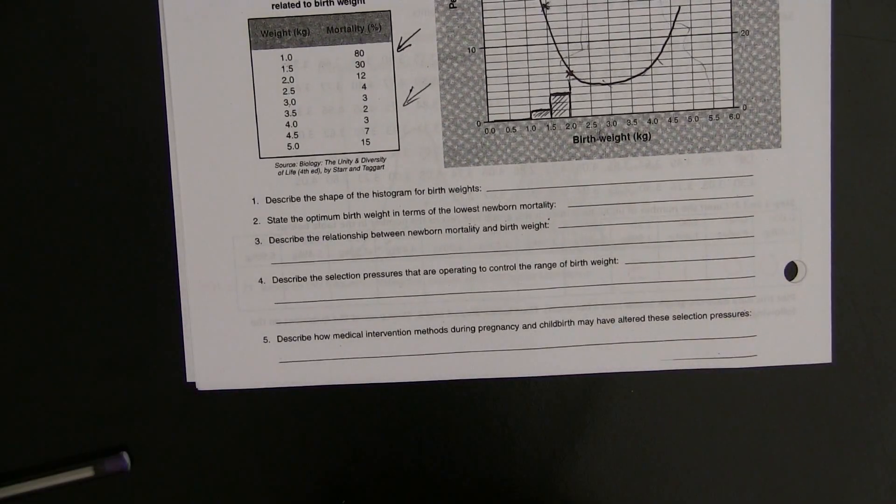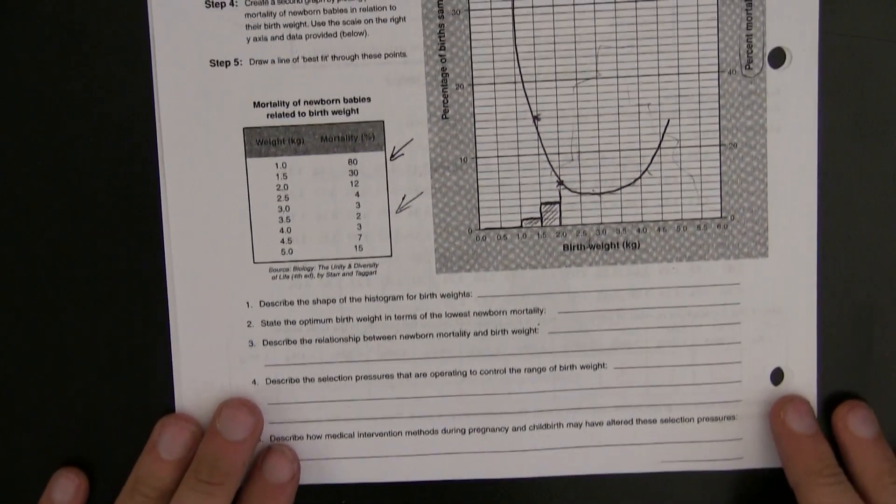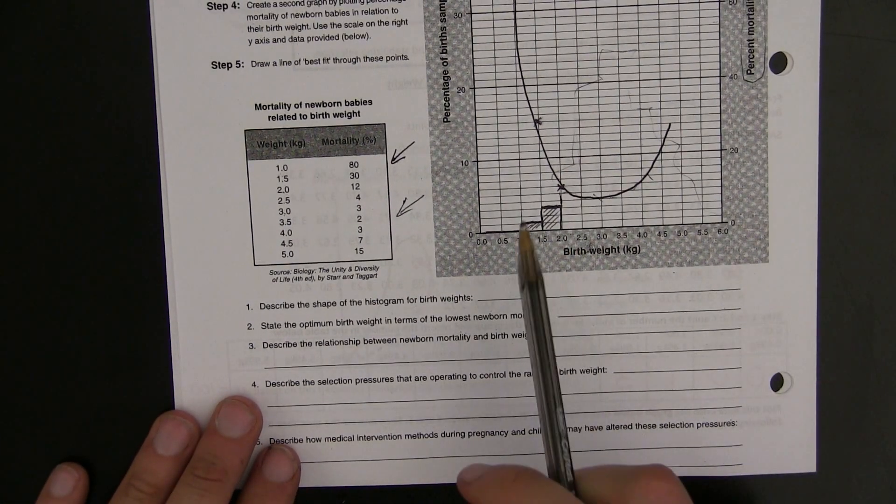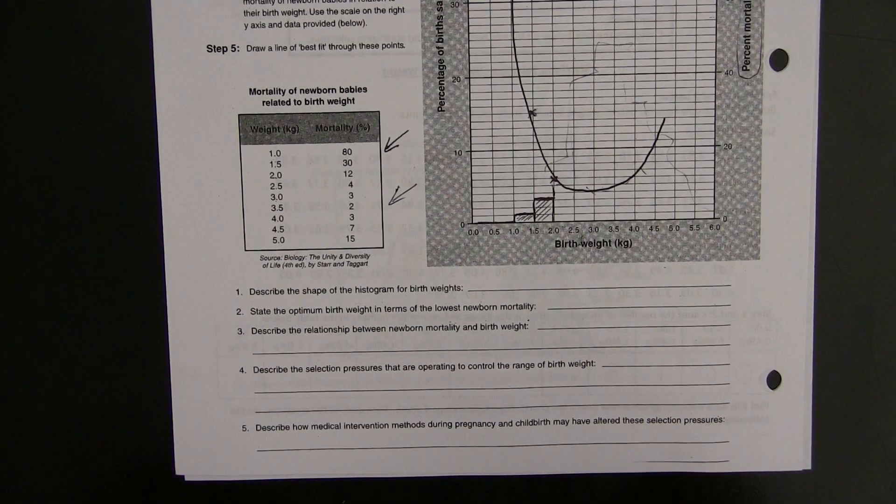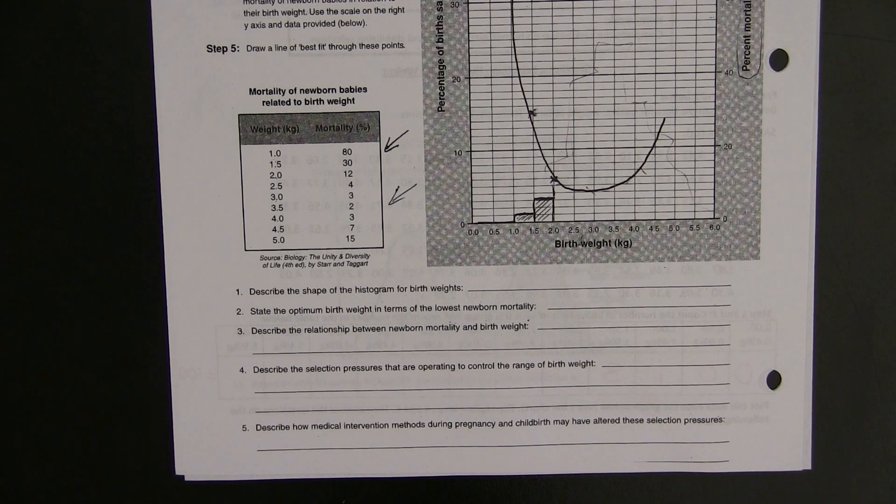Finally, describe how medical intervention methods during pregnancy and childbirth may have altered these selection pressures. Why is it that now fewer of the light and very heavy babies tend to die and more and more of them are able to live? So, that's the homework. Come and check in with me if you have any questions about it.